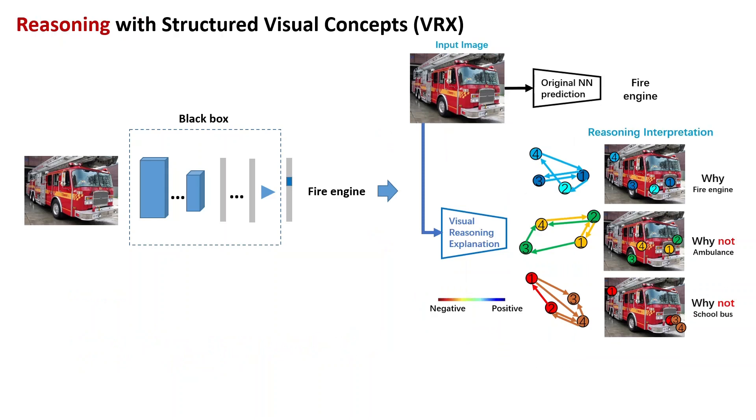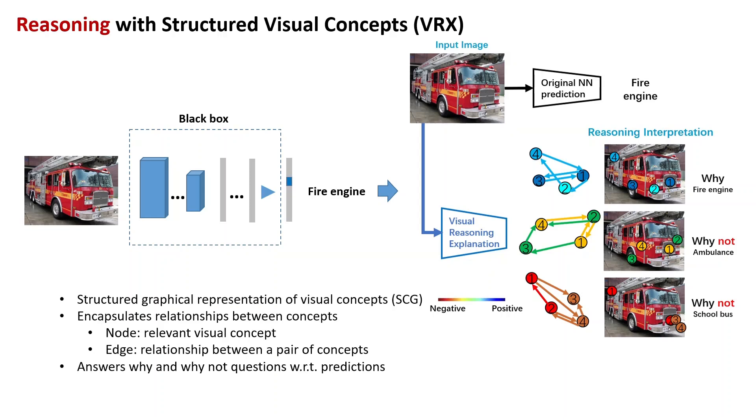Our visual reasoning explanation takes steps towards mimicking the reasoning process of neural networks. We explain this model decision by answering the question: why it is a fire engine, why not others? We use structural concept graph, where nodes represent visual concepts and edges represent relationships between concepts, to explain the reasoning logic.